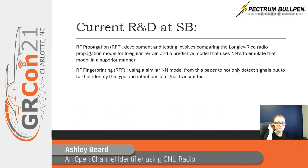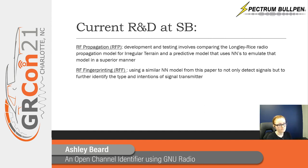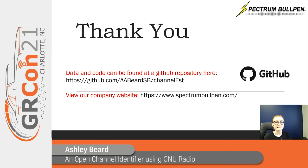The last thing I'd like to share is a preview of current research and development at Spectrum Bullpen. Our RF propagation modeling project will use machine learning to create radio signal coverage plots based on many environmental parameters. Another project uses machine learning to fingerprint radio transmitters. Thank you very much for your time. Our code and data are openly available at our GitHub link, and feel free to visit our company website to see more from us.